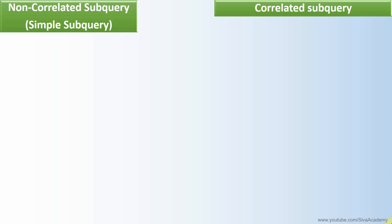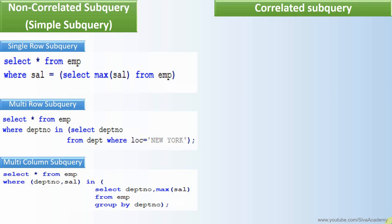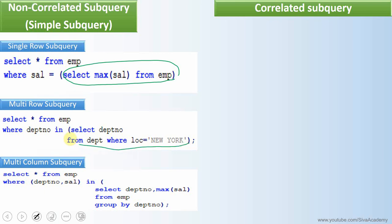The main difference between a simple subquery and correlated subquery is that in a simple subquery, the inner query will get executed first and that result will be used as input to the outer query. The inner query is independent of the outer query. It executes first, its result is used as input to the outer query, and then the outer query gets executed. This is common for all three types of non-correlated subquery.